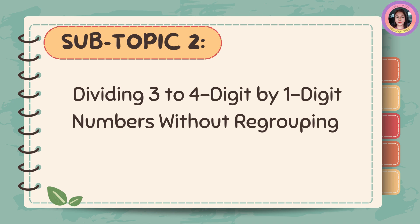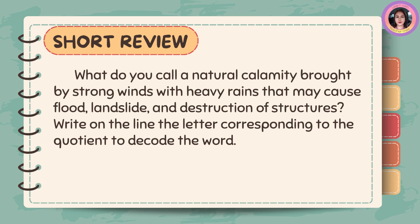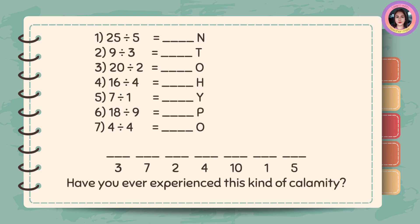Dividing three to four digits by one-digit numbers without regrouping. What do you call a natural calamity brought by strong winds with heavy rains that may cause flood, landslide, and destruction of structures? Write on the line the letter corresponding to the ocean to decode the word. Dividing three to four digits by one-digit numbers.